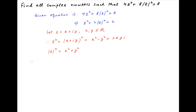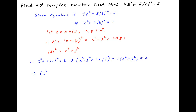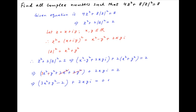Substituting these results, the equation z squared plus 2 times the absolute value of z squared equals 2 can be written as x squared minus y squared plus 2xy i plus 2 times open bracket x squared plus y squared close bracket equals 2. Separating the real and imaginary parts, this simplifies to 3x squared plus y squared minus 2 plus 2xy i equals 0 plus i times 0.